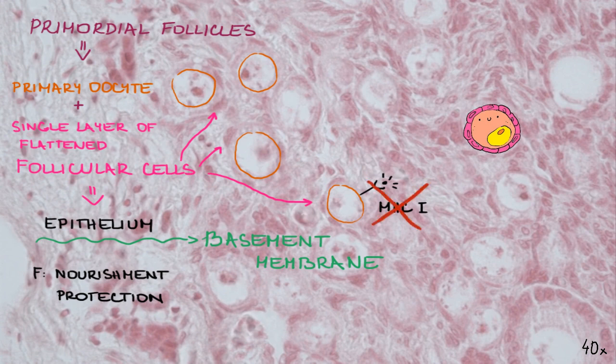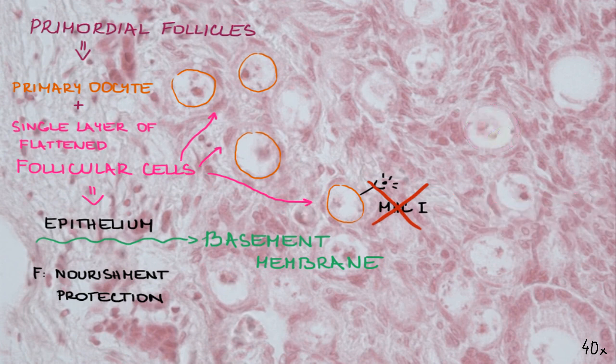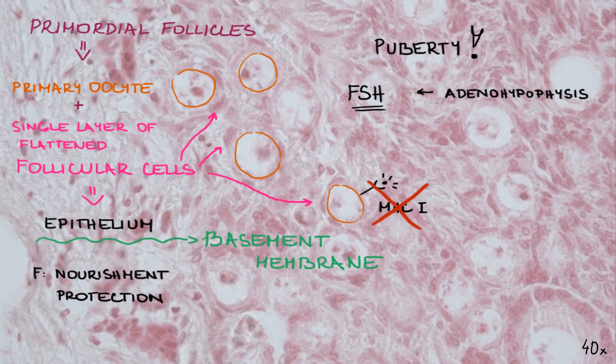The immune system attacks and destroys cells which do not display MHC1; thus we can see the importance of follicular cells, which prevent this. As a woman reaches puberty, the adenohypophysis starts production of follicle-stimulating hormone, FSH, which causes cyclic growth and maturation of follicles. In our species, only one follicle usually gets fully developed.